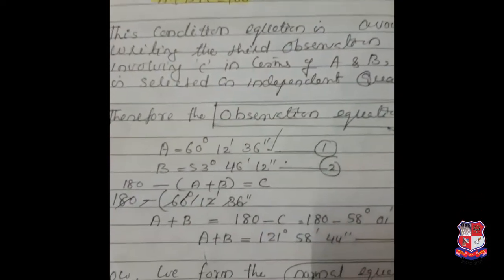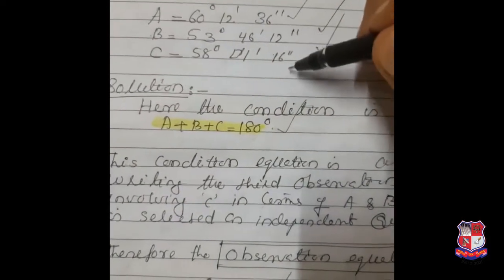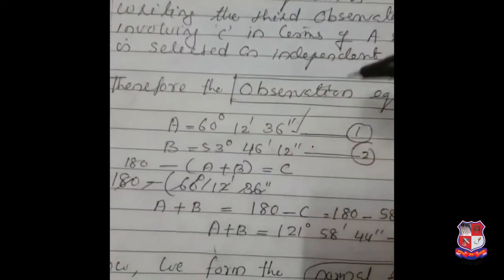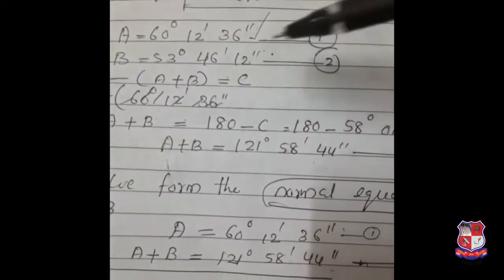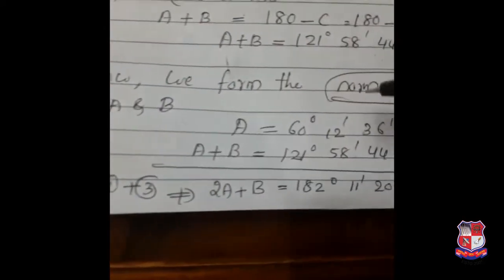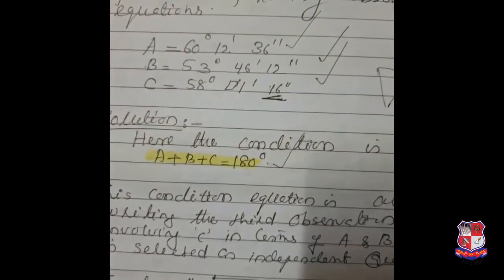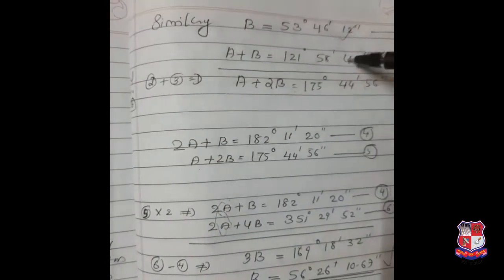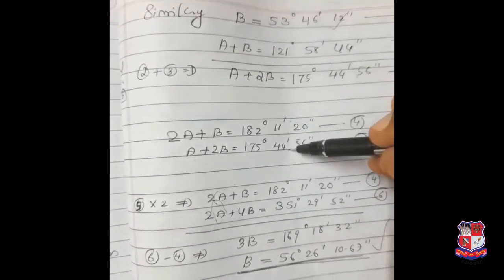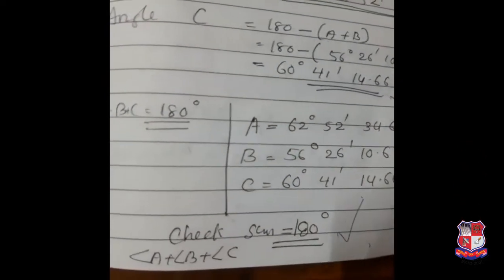One more important note: we are given A, B, and C values, but we do not directly use the C observation. Instead, we use A and B, and from A + B = 180 − C we derive the A + B value using C. From that, we form the normal equations for A and B, find their values, then compute C = 180 − (A + B). Adding all values proves that the sum of angles equals 180 degrees.